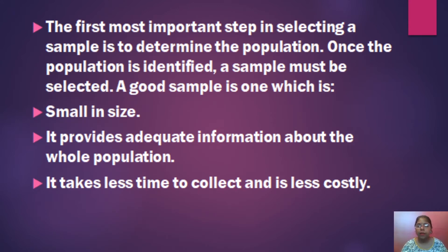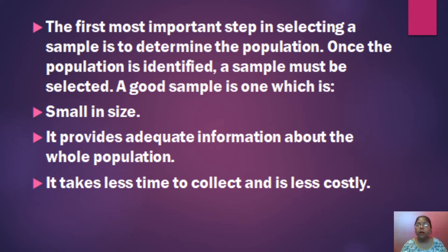The first most important step in selecting a sample is to determine the population. Before doing the process of sampling, we have to decide who or what the population is. Once the population is identified, a sample must be selected. For example, if we are taking students from BBD University or from any university, then the students of that particular university are our population.